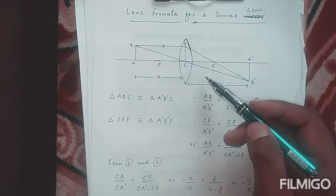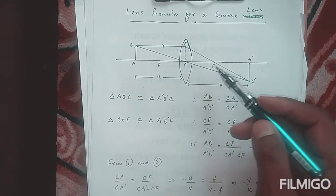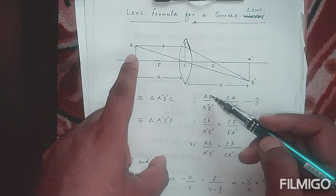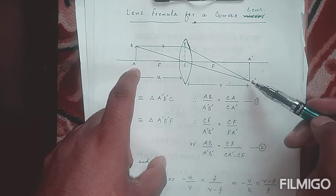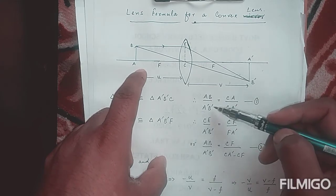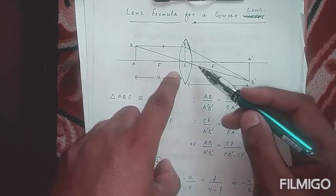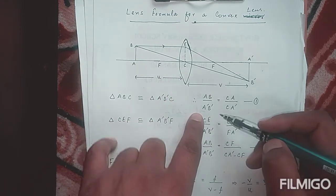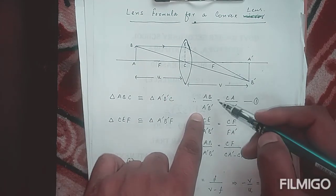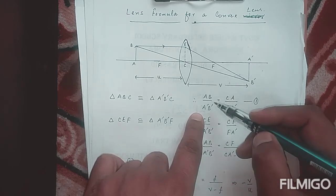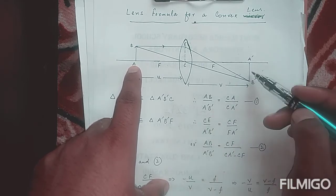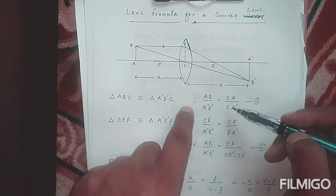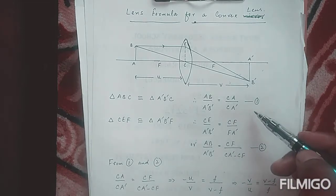Now, if this is the case, we know that when two triangles are similar, the ratio of their corresponding sides is equal. So taking the ratio of the perpendiculars and the bases of the two triangles, and equating them, we get Equation 1.